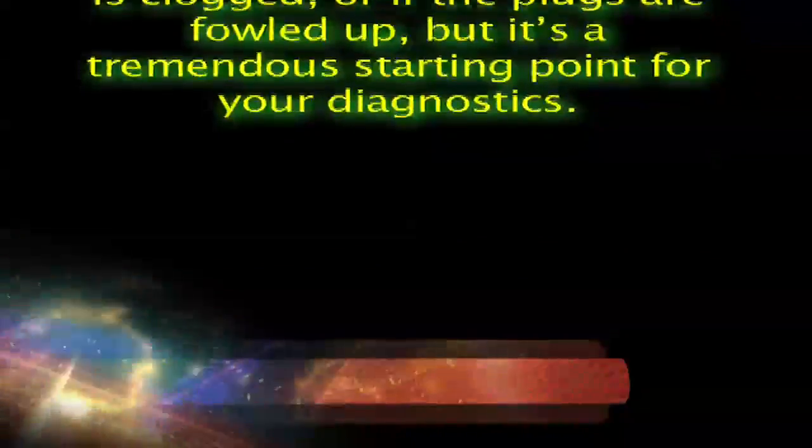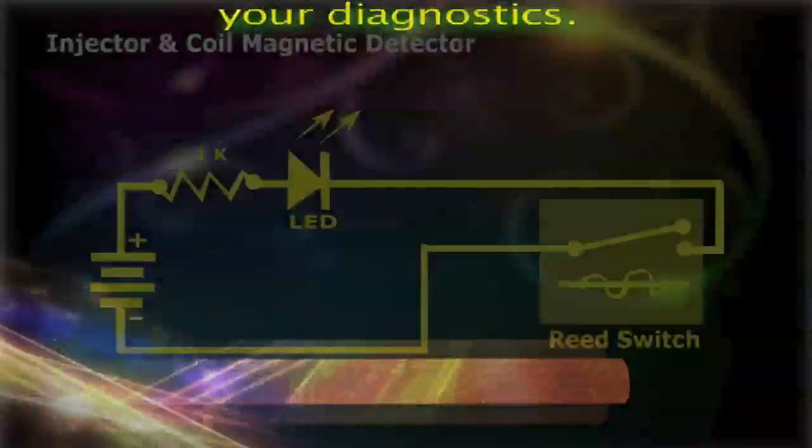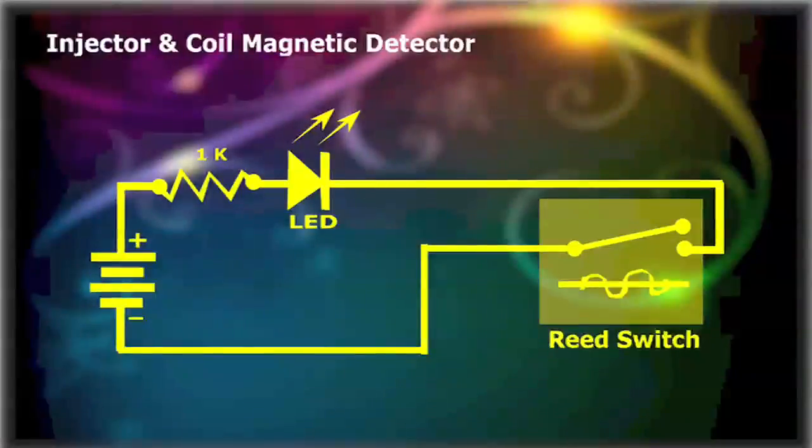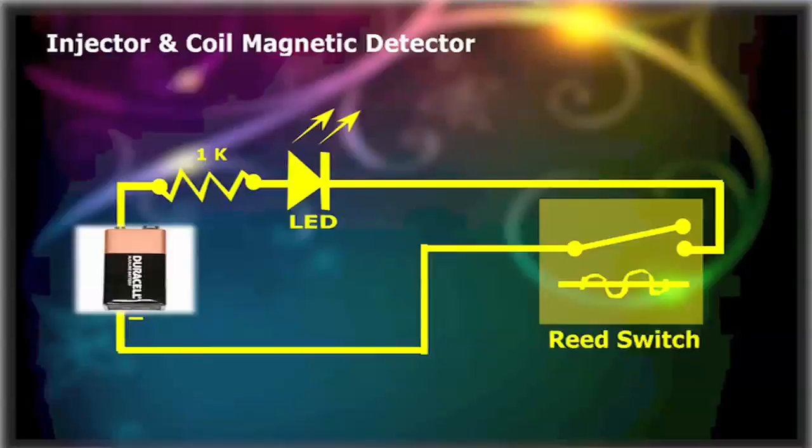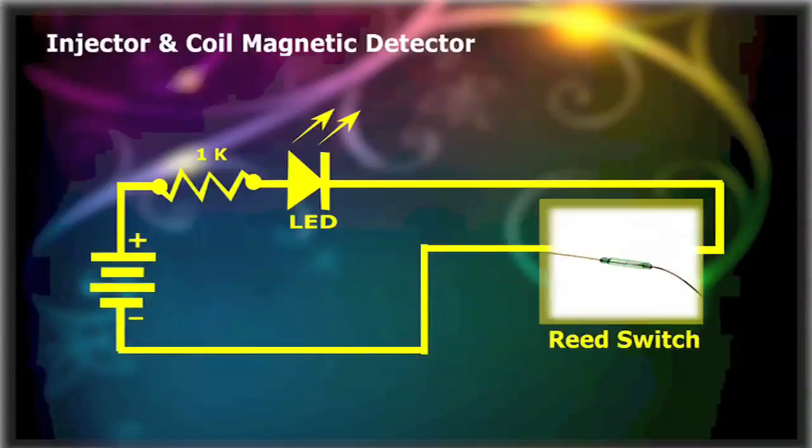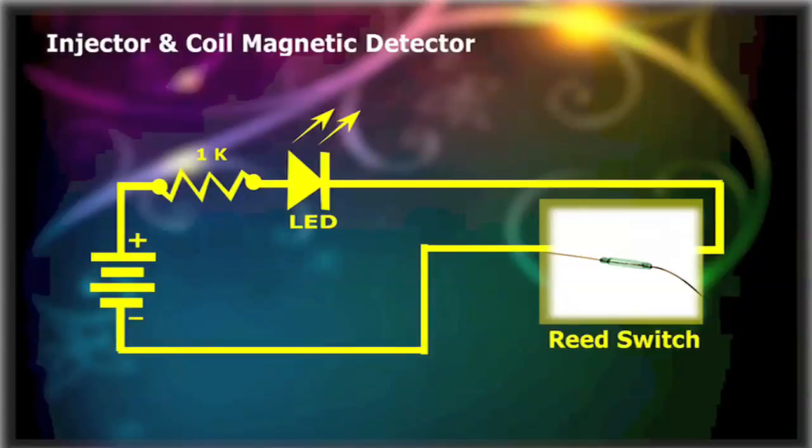The circuit is a simple series type which includes a 9V battery, a 1K resistor as a current limiter, an LED to signal the presence of a coil or injector actuation, and the actual reed switch.